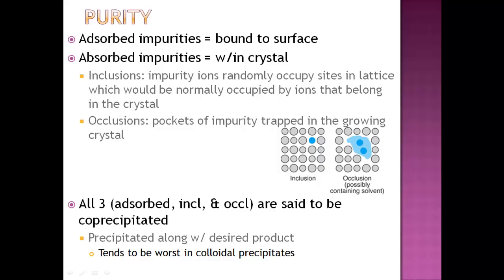So I kind of went over these two words before, adsorbed and absorbed. Adsorbed is bound to the surface, and absorbed is within the crystal. But in this section, we're talking about impurities. So we don't want those, we want to get rid of those. Now, when we talk about absorbed impurities, so those within the crystal, there's two types of absorbed impurities.